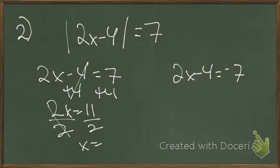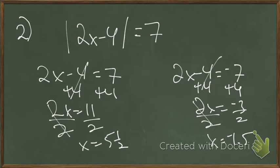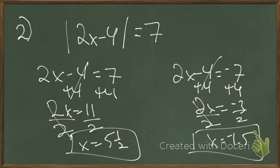Solving gives us x equals 5.5. Then adding 4 to the other equation, 2x equals negative 3, so x equals negative 1.5. A quick review: we have our two answers because the absolute value of the positive and the absolute value of the negative are the same.